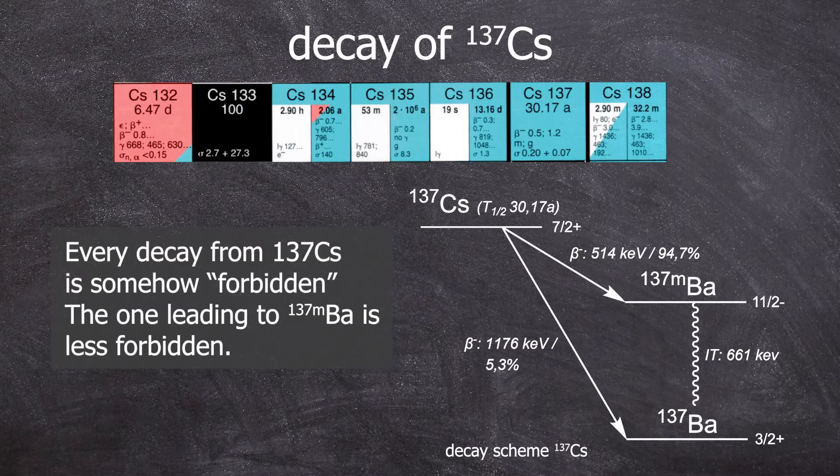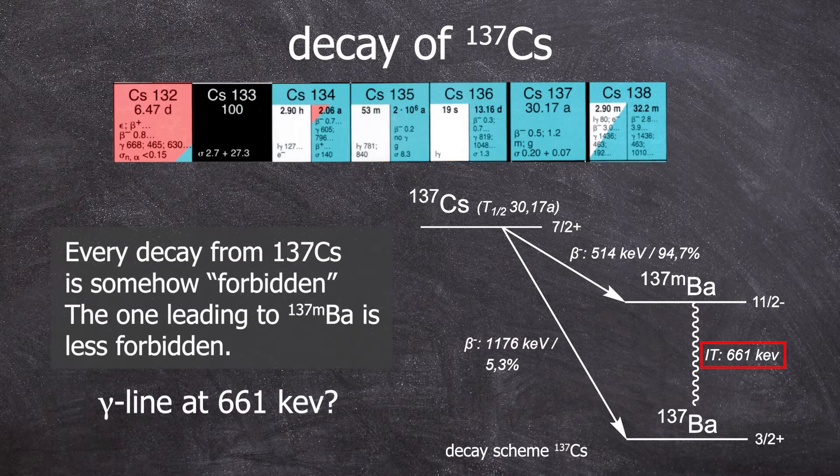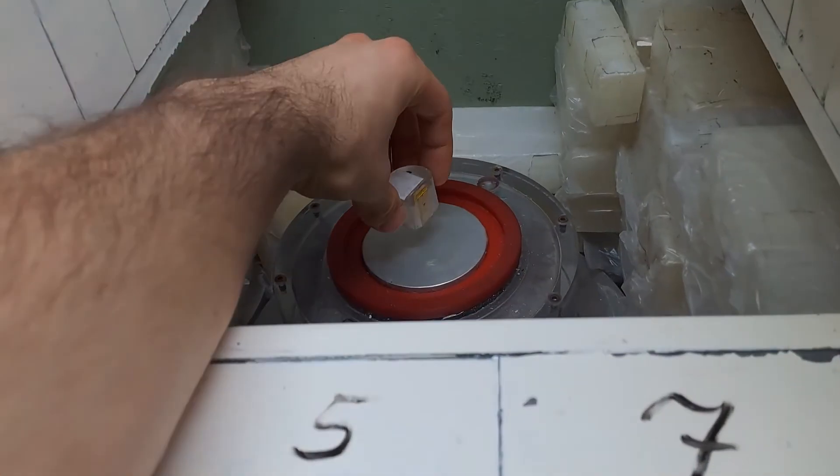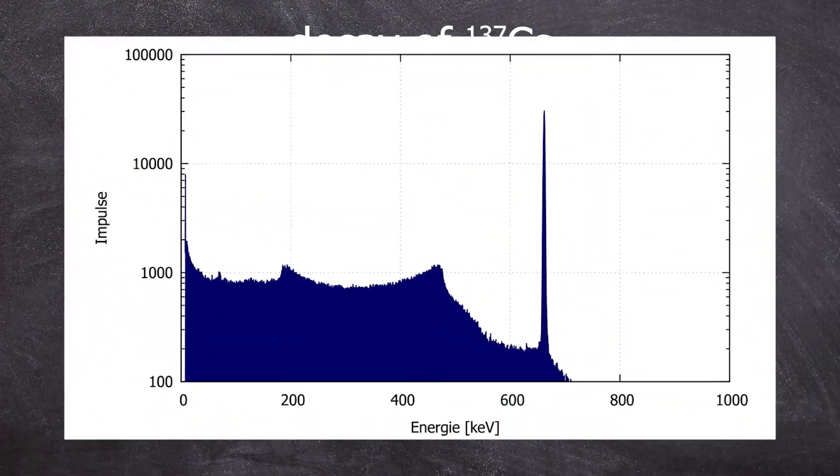We can clearly see a 661 keV gamma photon from the decay of cesium-137 into barium-137G. This can be confirmed by the Geiger counter.